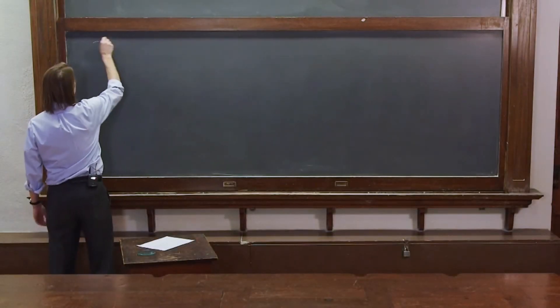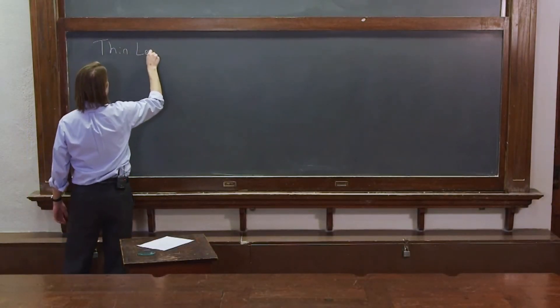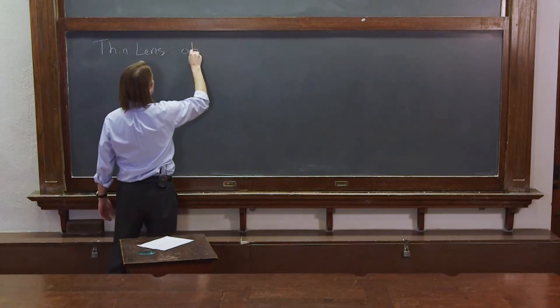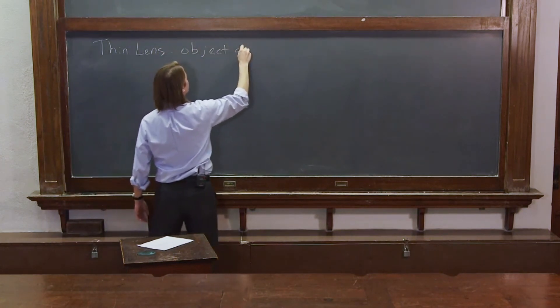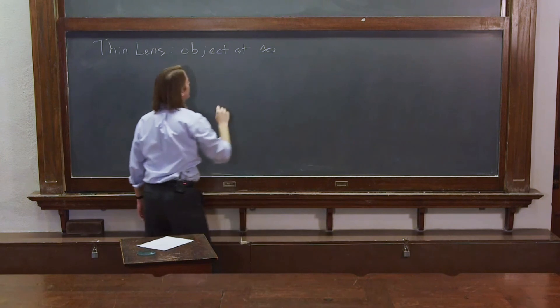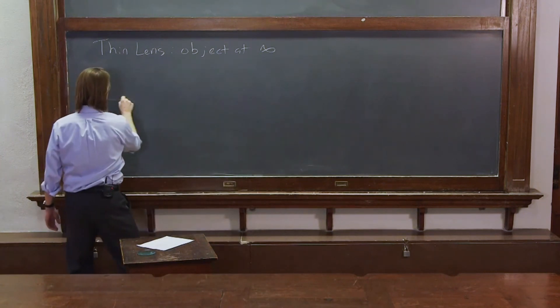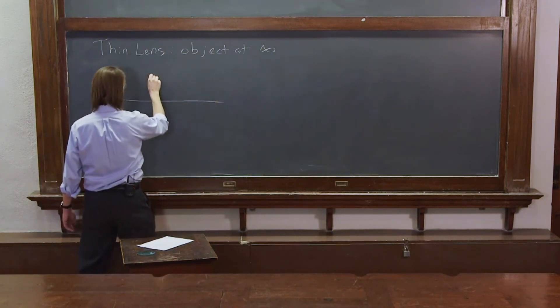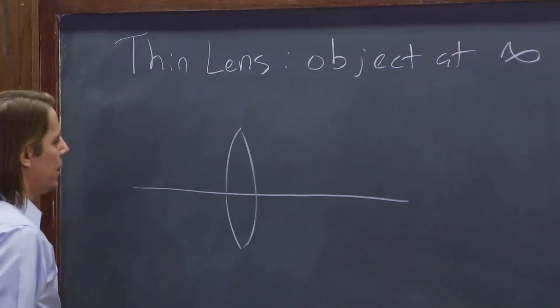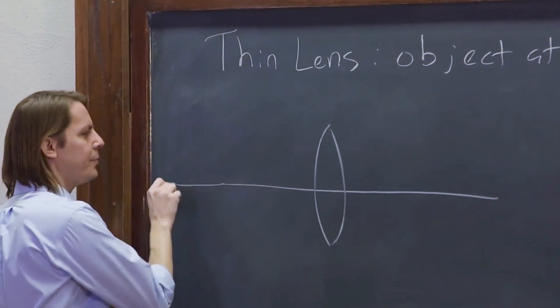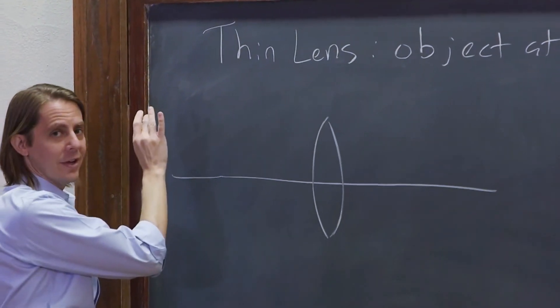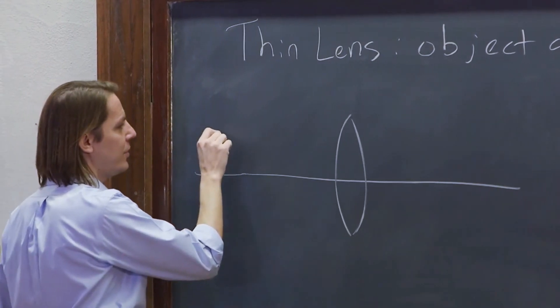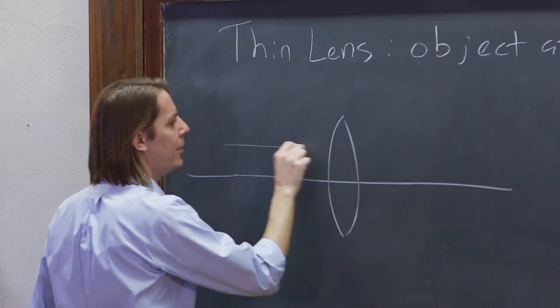We can now do a special case of the thin lens: object at infinity. So if we draw our optical axis and our thin lens like that, and if our object is at infinity, then all the rays are essentially going to come in parallel.